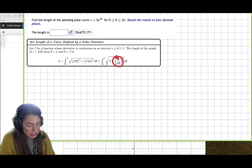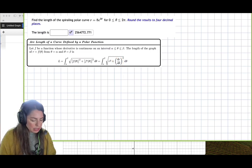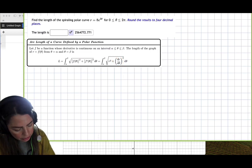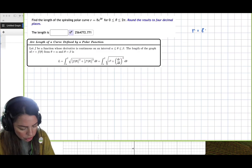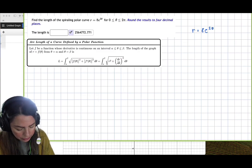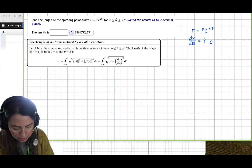And so all we need is dr d theta. So let's go ahead and do that on the side here. So if r is equal to 8 e to the 2 theta, we know that dr d theta is equal to 8 times e to the 2 theta,